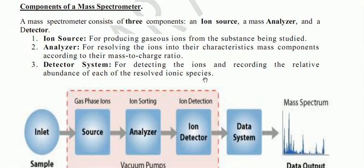The ion source is for producing gaseous ions from the substance being studied. The analyzer is for resolving the ions into their characteristic mass components according to their mass-to-charge ratio.